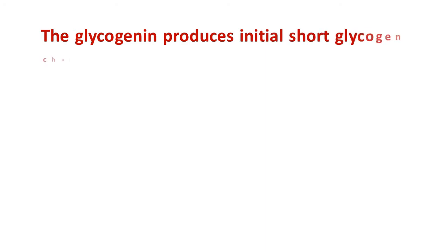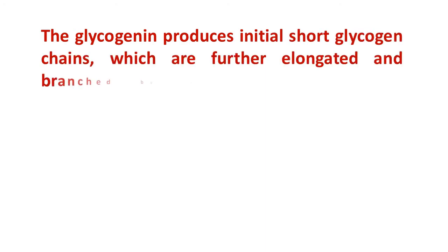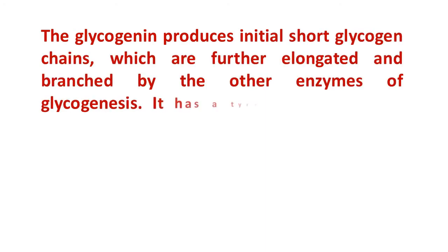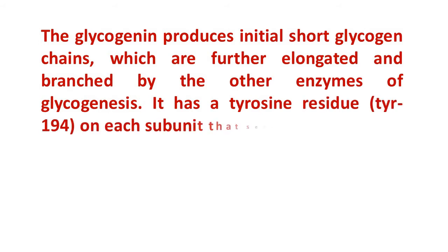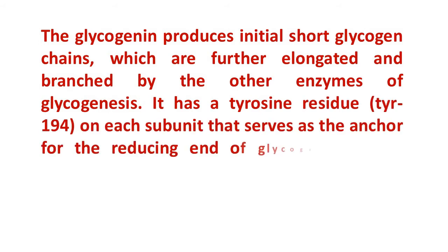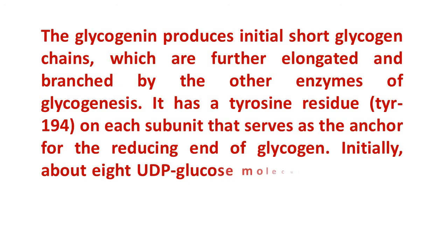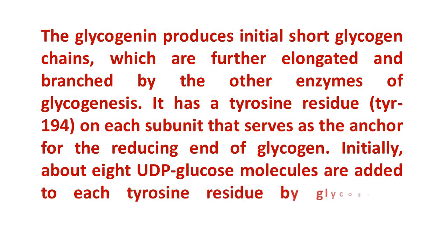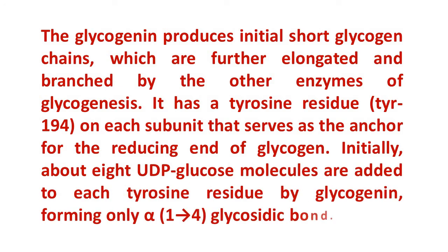Glycogenin creates initial short glycogen chains, which are then lengthened and branched by the other enzymes of glycogenesis. It has a tyrosine residue at position 194 on each subunit that serves as the anchor for the reducing end of glycogen. Initially, about 8 UDP-glucose molecules are added to each tyrosine residue by glycogenin, forming only alpha-1,4 glycosidic bonds.